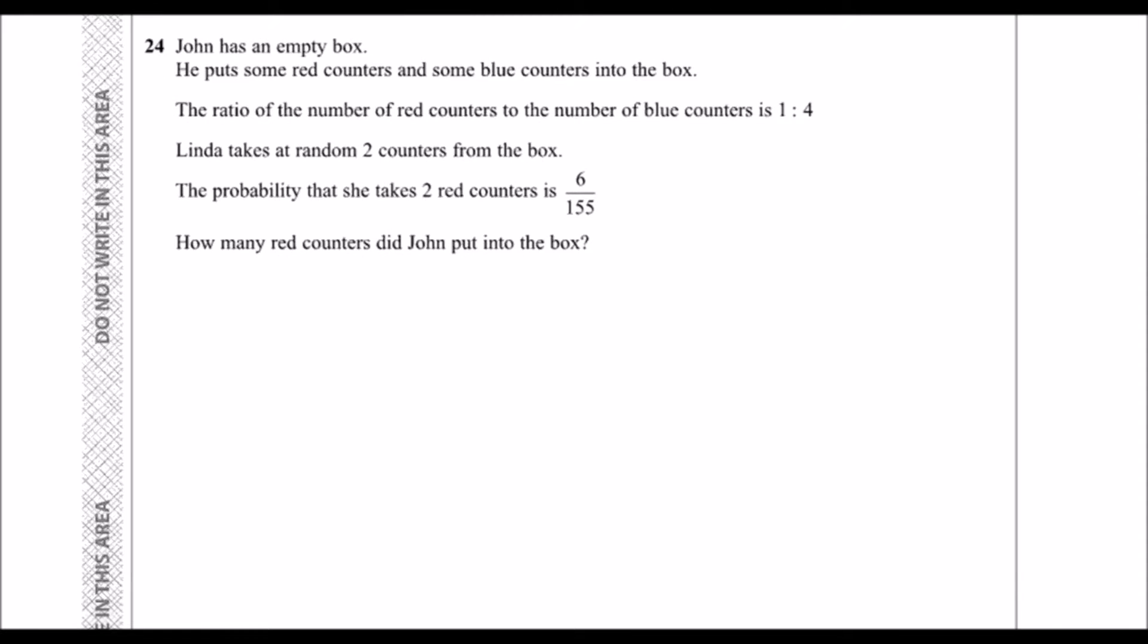Okay, John has an empty box. He put some red counters and blue counters into the box. The ratio of the number of red counters to the number of blue counters is one to four.